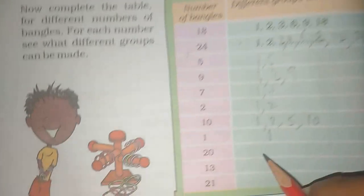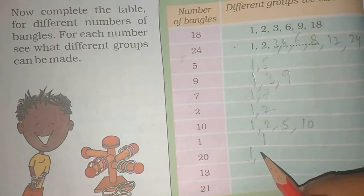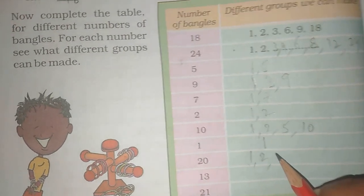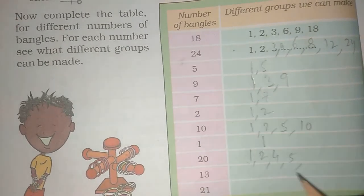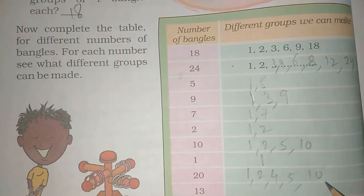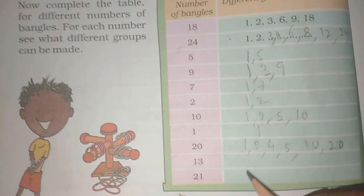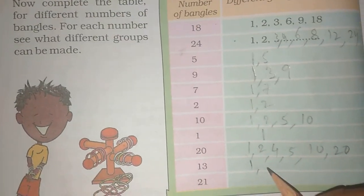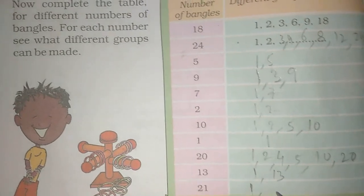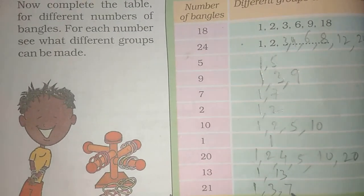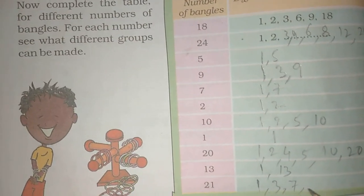Ten: 1, 2, 5, 10. Twenty: 1, 2, 4, 5, 10, 20. Twenty-one: 1, 3, 7, 21.